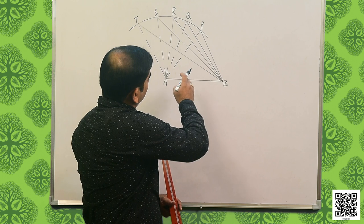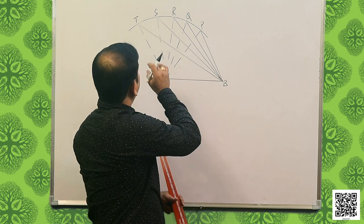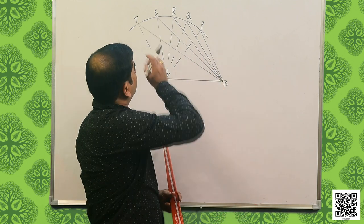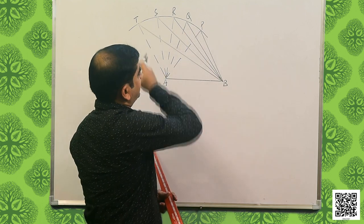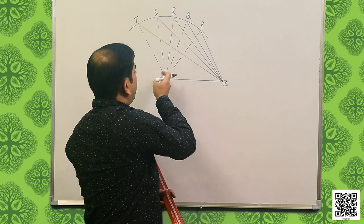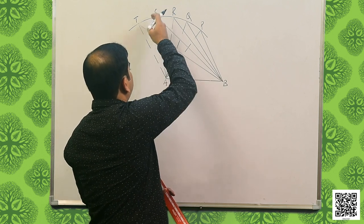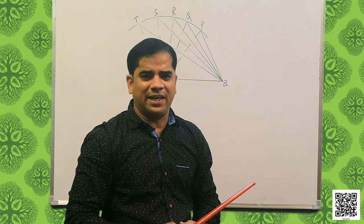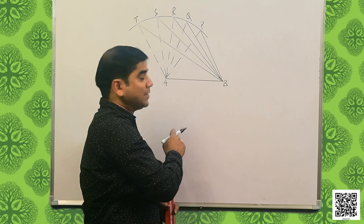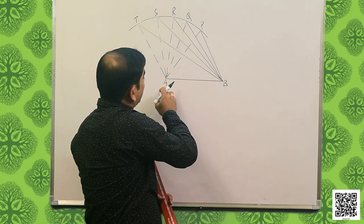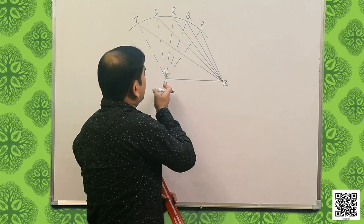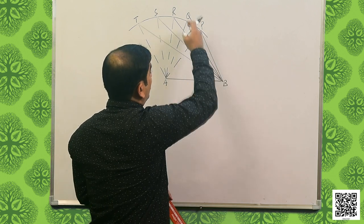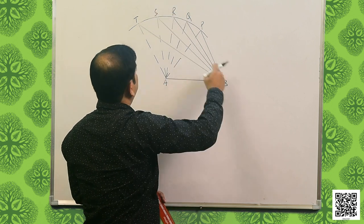We have triangles APB, AQB, ARB, ASB and ATB. When we go from P towards T, the length of the side AP increases gradually: AP is smaller than AQ, smaller than AR, smaller than AS, and smaller than AT. Correspondingly, the side opposite to angle A — which is PB — also increases: PB is smaller than QB, smaller than RB, smaller than SB, smaller than TB.